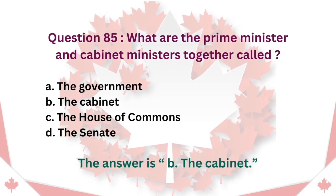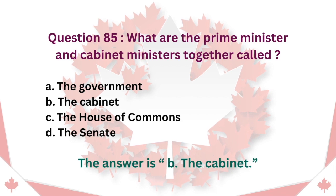Question 85: What are the Prime Minister and Cabinet Ministers together called? A. The Government. B. The Cabinet. C. The House of Commons. D. The Senate. The answer is B. The Cabinet.